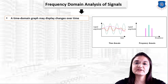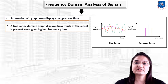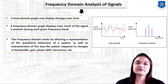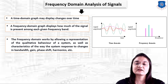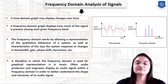A time domain graph displays changes over time, while a frequency domain graph displays how much of the signal is present among each given frequency band. Frequency domain works by allowing the representation of qualitative behavior of the system as well as characteristics of the way the system responds to changes in bandwidth, gain, phase shift, and harmonics.